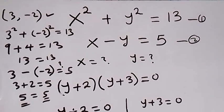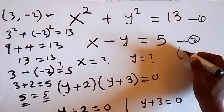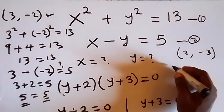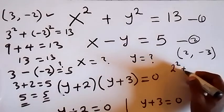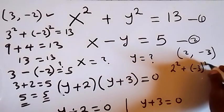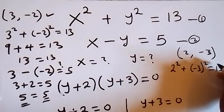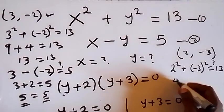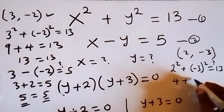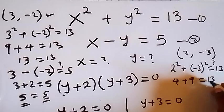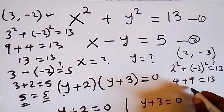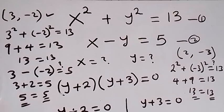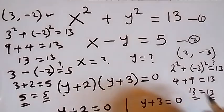Similarly, the second solution (2, −3): when we substitute into equation 1, we have x is 2, so 2 squared plus (minus 3) squared — is that equal to 13? We have 4 plus 9, that is 13, which equals 13. Left-hand side equals right-hand side, so that satisfies the first equation.